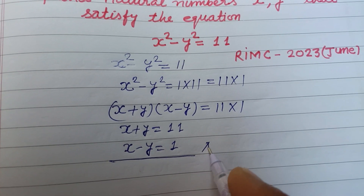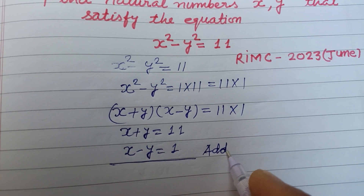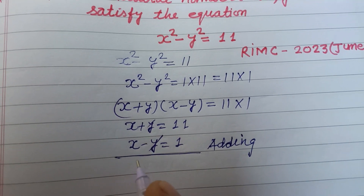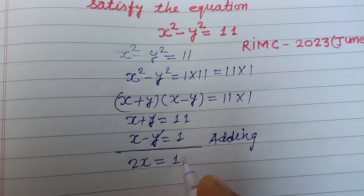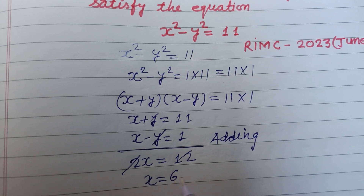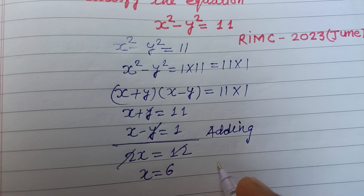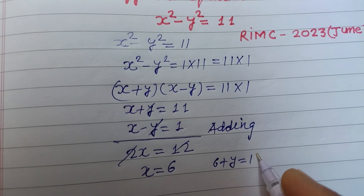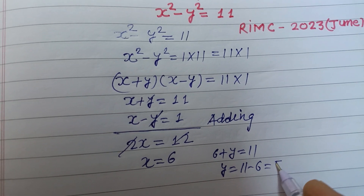Now adding these two equations, the y terms cancel. We get 2x equal to 11 plus 1, which is 12. So x equal to 6. Putting this value in the first equation, 6 plus y equal to 11. Therefore y equal to 11 minus 6, which is 5.